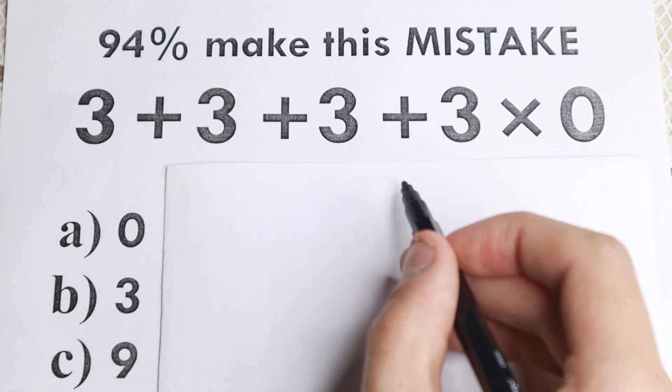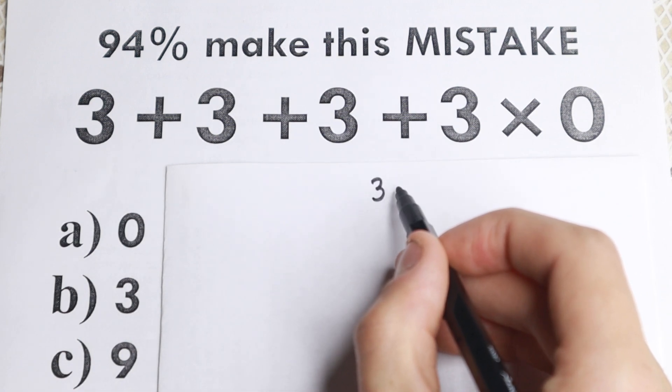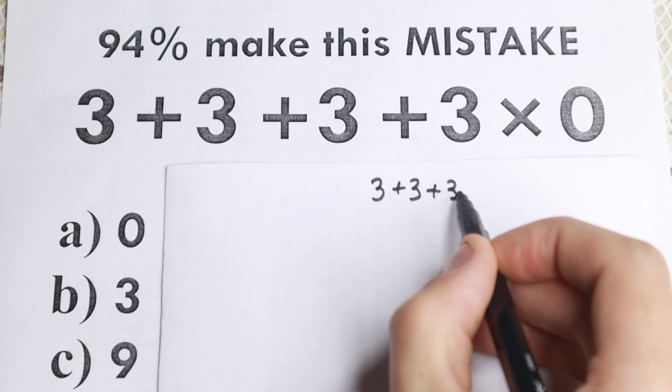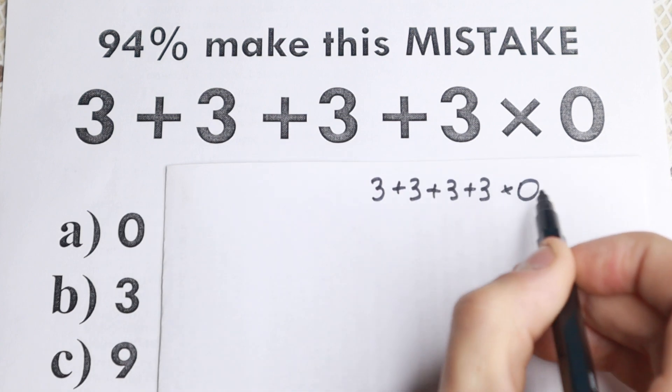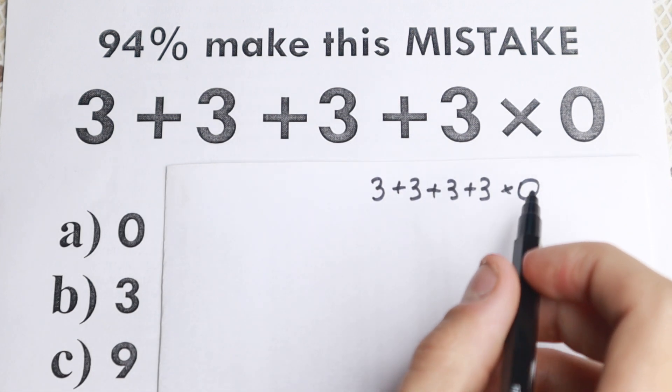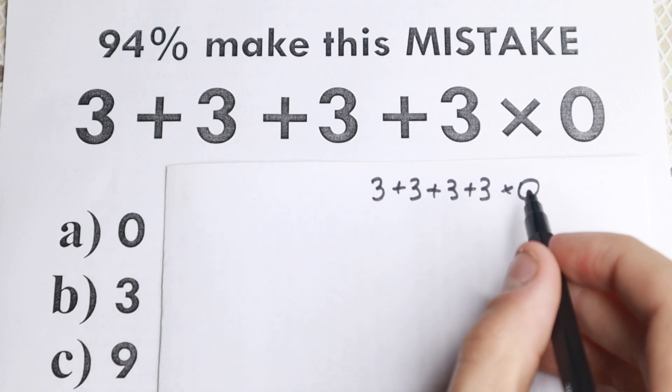And I want to start with this step. A lot of students do this like that. So they have 3 plus 3 plus 3 plus 3 and times 0. A lot of students say you tell us that right here it doesn't matter what number,